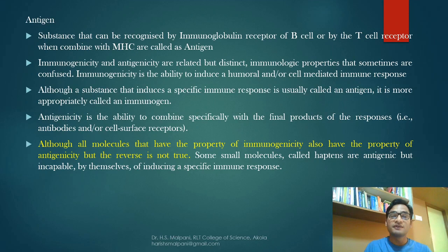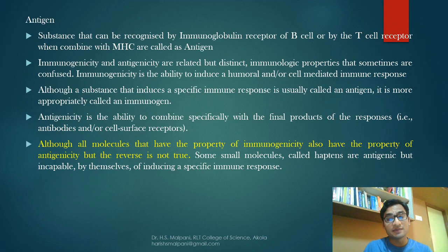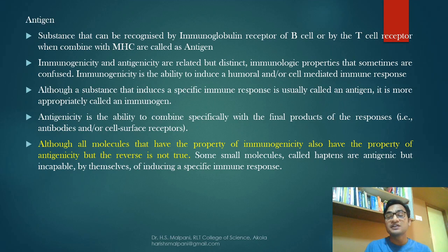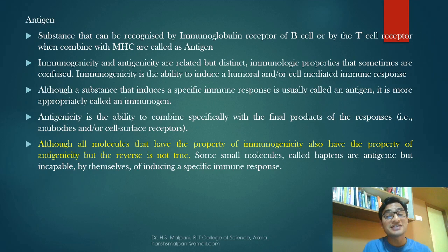We need to discuss the differences between immunogenicity and antigenicity, because sometimes people consider them synonyms but they are not the same. Immunogenicity is the ability to induce humoral or cell-mediated immune response, while antigenicity is the ability to combine specifically with the final products of these responses — antibodies or cell receptors. Although substances that induce specific immune response are usually called antigens, more precisely they should be called immunogens. All molecules with immunogenicity also have antigenicity, but the reverse is not true.